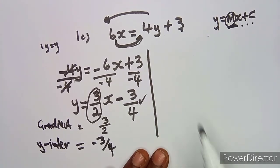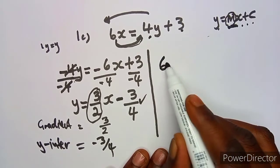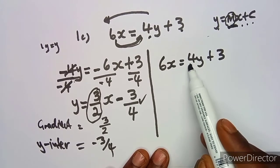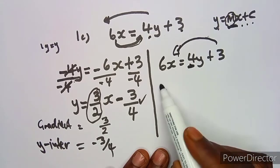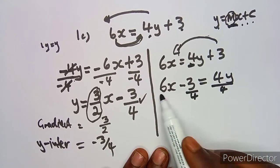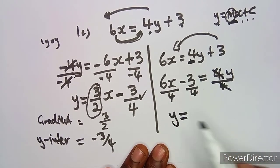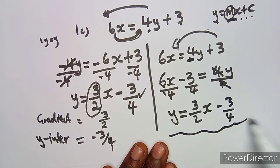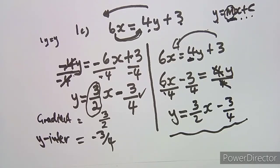Alternatively, since the 4y is positive, we can leave it on the right and transpose: 6x - 3 = 4y, then divide each term by 4, giving y = (3/2)x - 3/4. As you can see, we obtain the same equation using either method. From there we can identify the gradient and y-intercept.